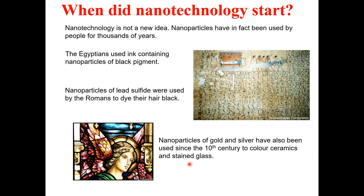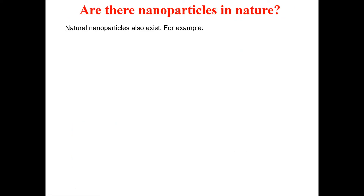Additionally, nanoparticles of gold and silver have been used since the 10th century to color ceramics and stained glass. These three examples demonstrate that people in the past used nanotechnology for different purposes, confirming that nanotechnology is not new but existed in nature for thousands of years.